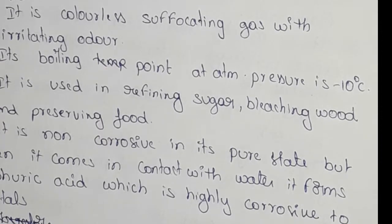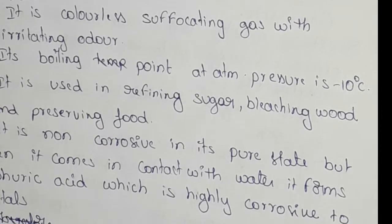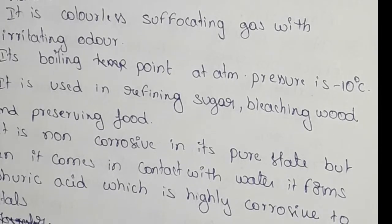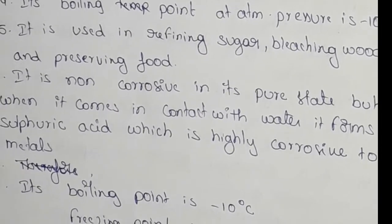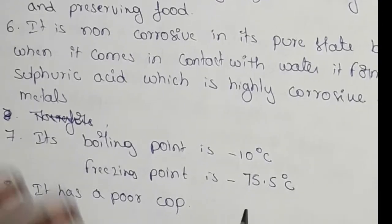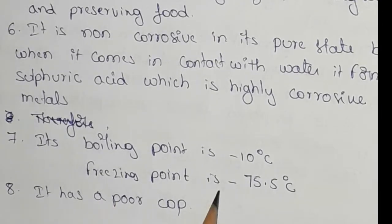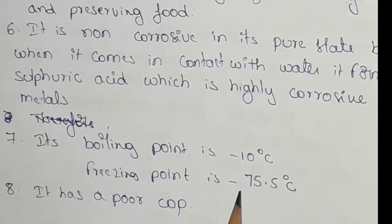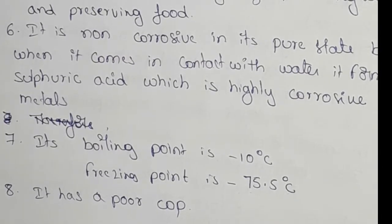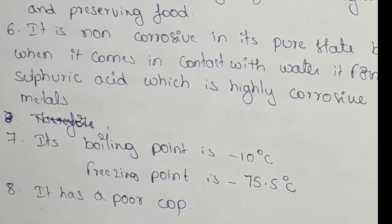When it forms sulfuric acid, it becomes highly corrosive to metals. The boiling point is minus 10 degree centigrade and the freezing point is minus 75.5 degree centigrade. It has a poor COP.